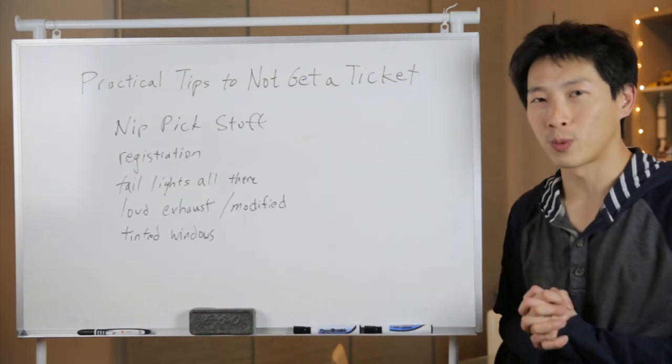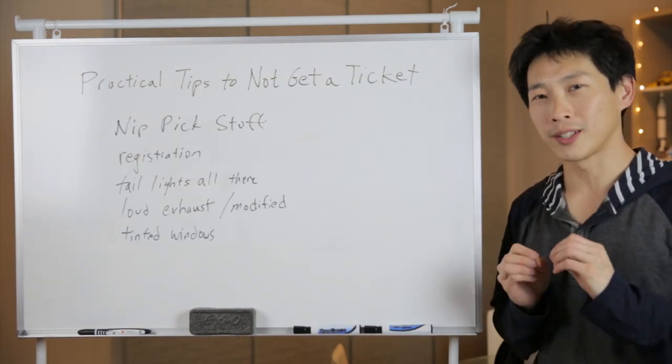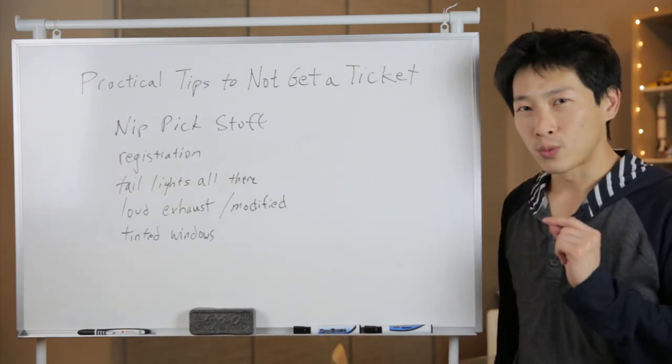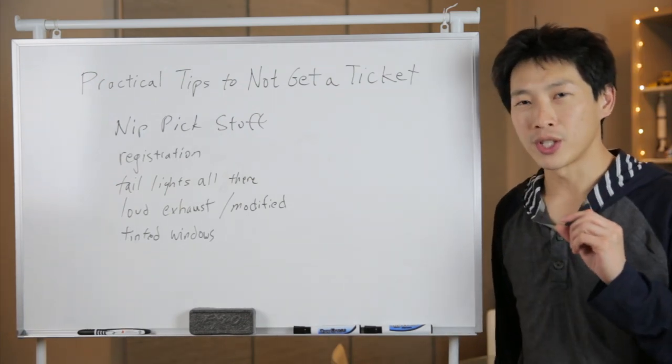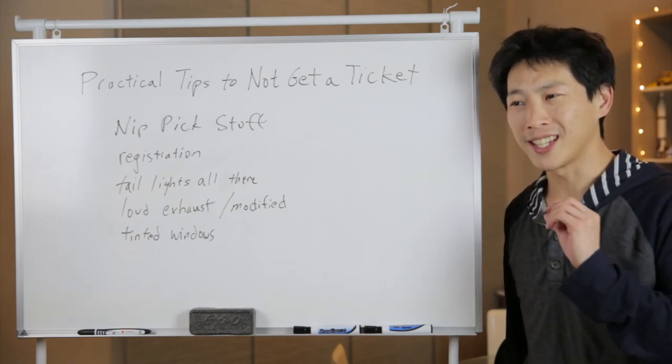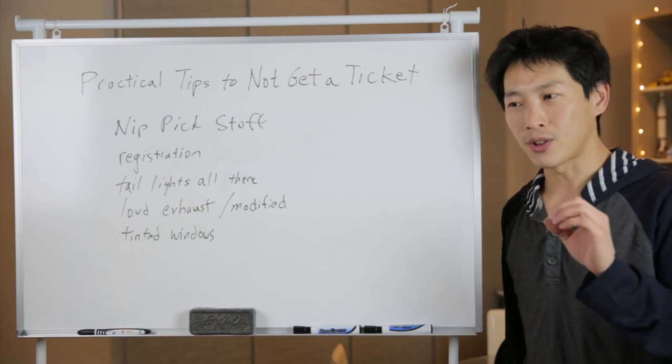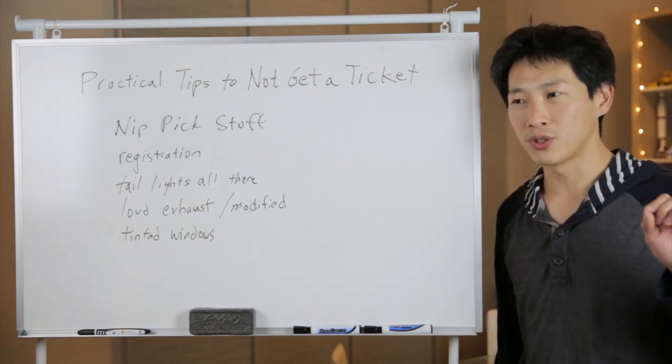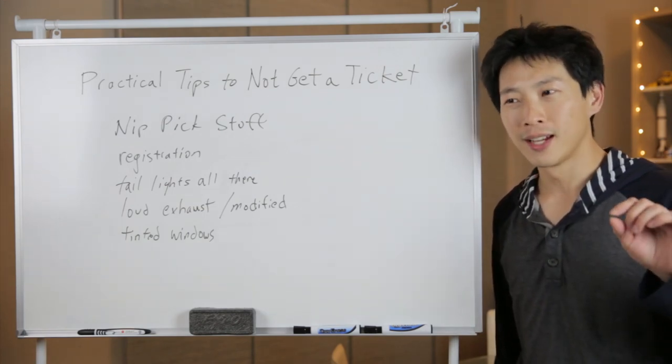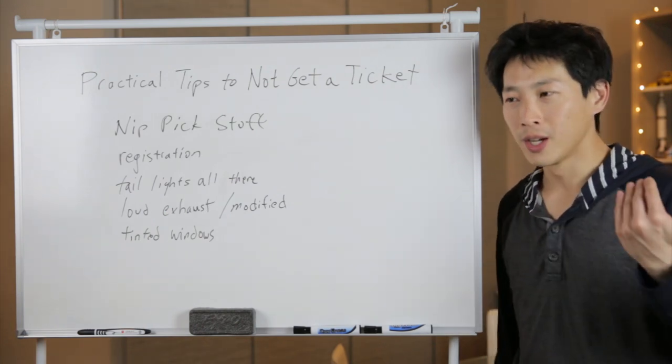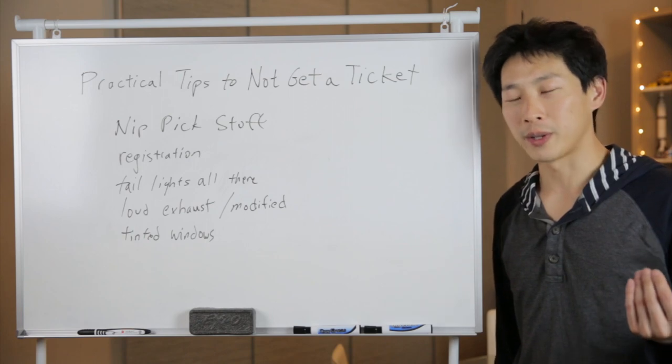The next set of stuff is what I call nitpicky stuff. If there's something wrong that gives the police a reason to stop you, they will. The number one thing is registration. You can see that registration sticker is a different color, and they can see this from really far away. I've had policemen stop me for having a different month. It was just off by like a few days, and they stopped me for that. Tail lights needs to all work. So if you have a friend that tells you your light is broken, go and fix it right away.